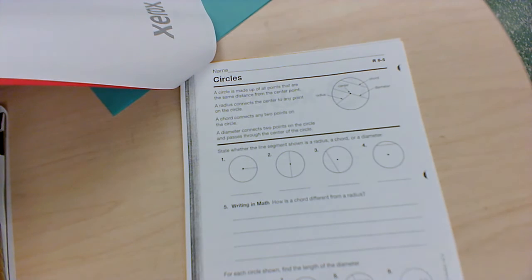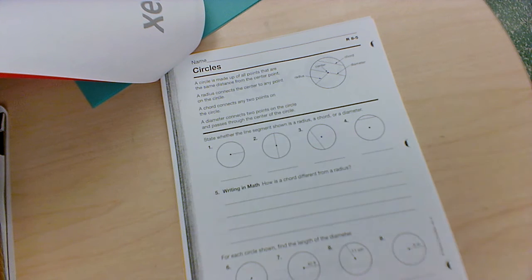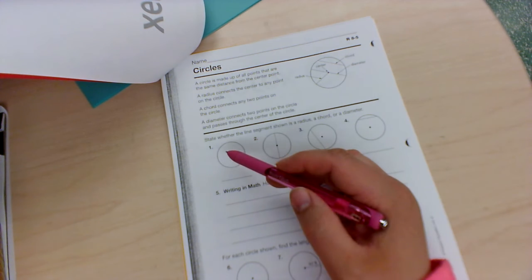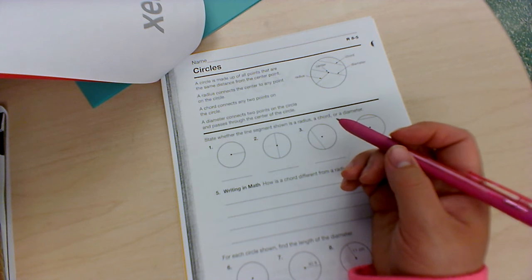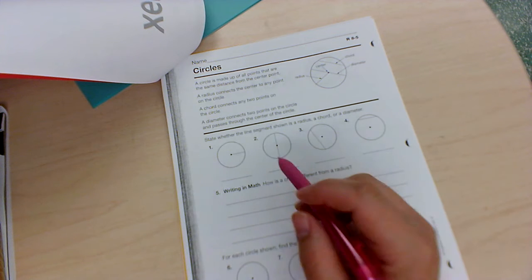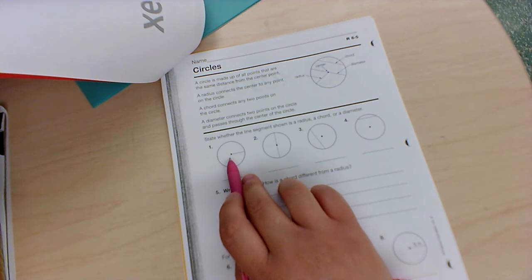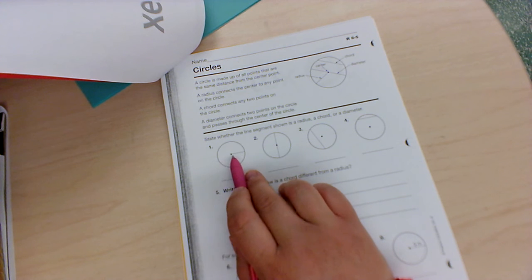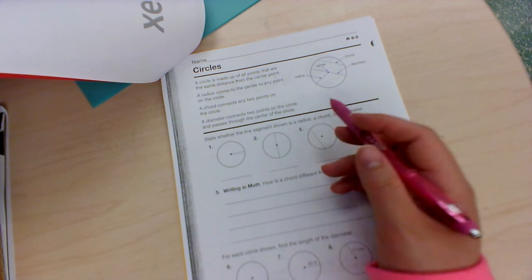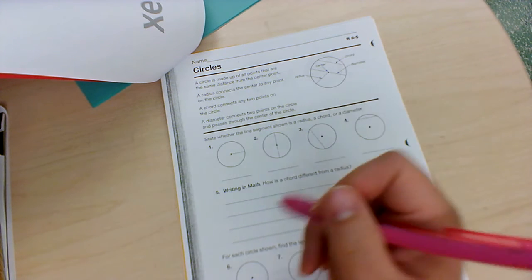Down below it says state whether the line segment shown is a radius, a chord, or a diameter. So number one, it connects to the center and goes to the edge but it does not go all the way through, so that is a radius.